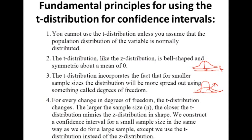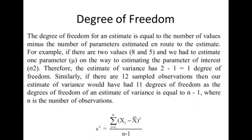For every degree of freedom, we have a different t-distribution. The larger the sample size, the closer the t-distribution becomes to the z-distribution — as sample size increases, t-distribution converges to z-distribution. We construct a confidence interval for a small sample size in the same way as for a large sample, except we use t-distribution instead of z-distribution. In place of z, we use t-distribution.